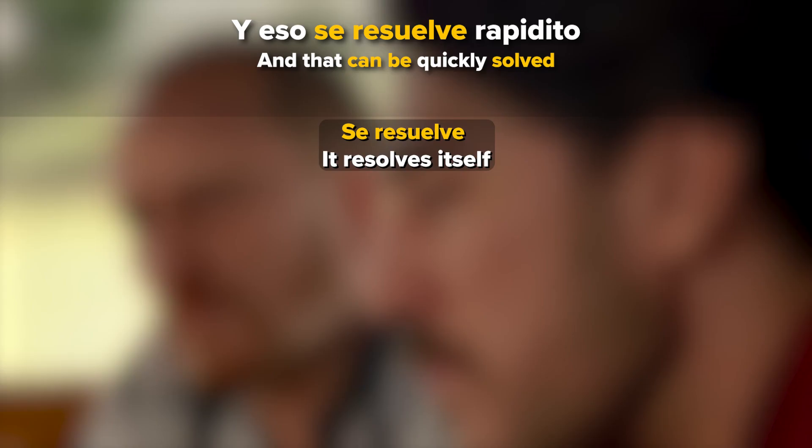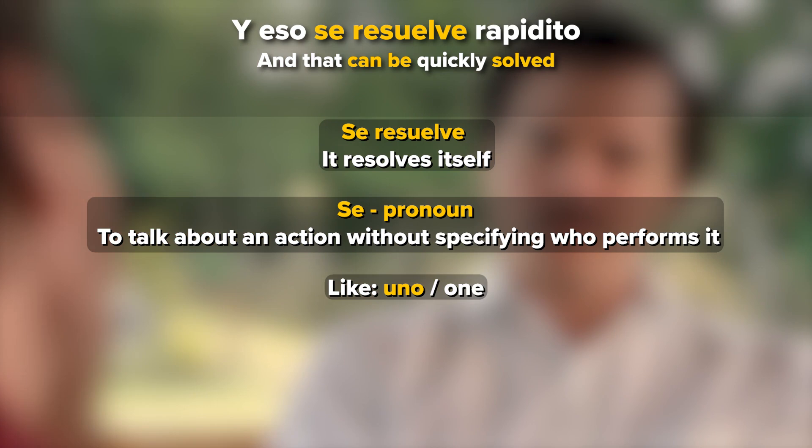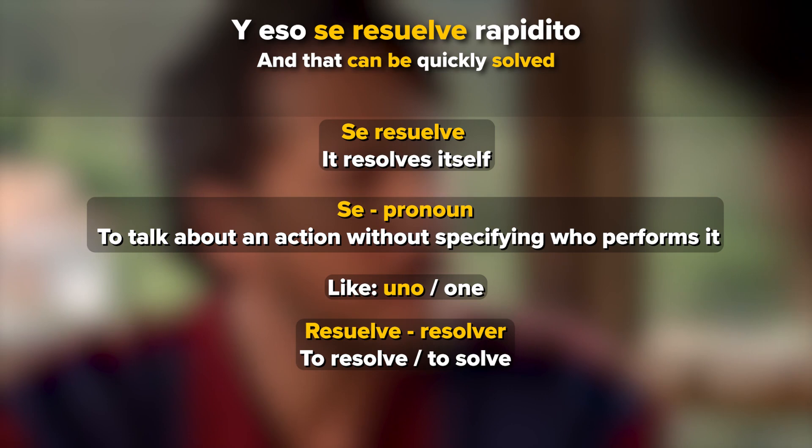Y eso se resuelve rapidito. 'Se resuelve' means literally 'it resolves itself.' One of the uses of the pronoun 'se' is to talk about an action without specifying who performs it, just like when using the word 'uno' to talk in a general impersonal way. And 'resuelve' is a present conjugation of the verb 'resolver,' to resolve or to solve. So the expression 'se resuelve' actually means 'one resolves' or 'one can solve.'